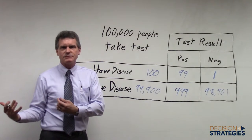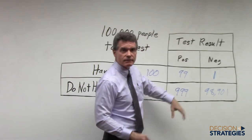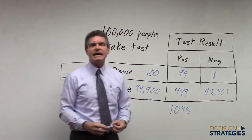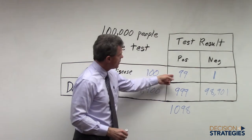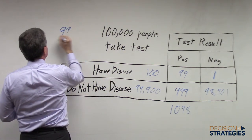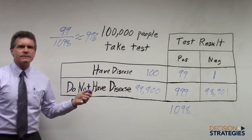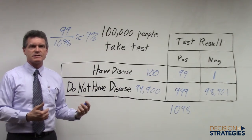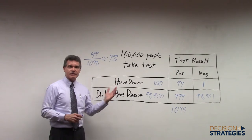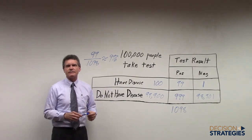So just as with the game show host problem, when you go in and get your test result and it comes back positive, all you know for sure is you're in this column here. And there are, if you add those up, one thousand ninety-eight people. So out of a random hundred thousand people, you would expect one thousand ninety-eight to have a positive test result. But of those, only ninety-nine would actually have the disease. And ninety-nine over one thousand ninety-eight is about nine percent. So even though the test is 99% reliable, if you go in and get a positive result in this case, there's only a nine percent chance that you actually have the disease. It's important to think these things through and to understand this logic when you're interpreting things like test results.